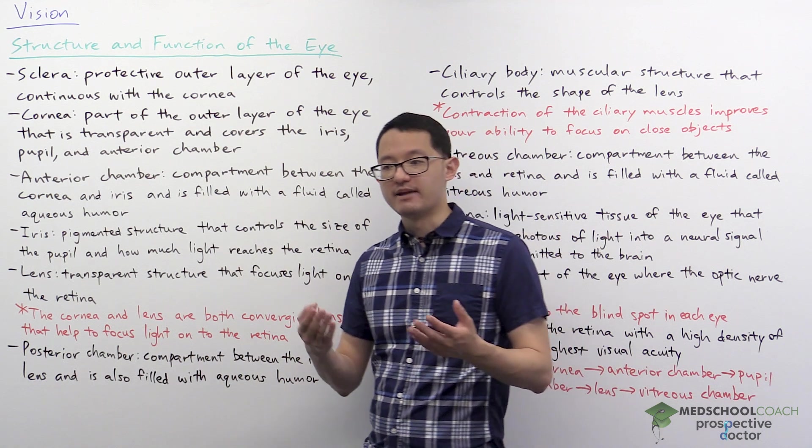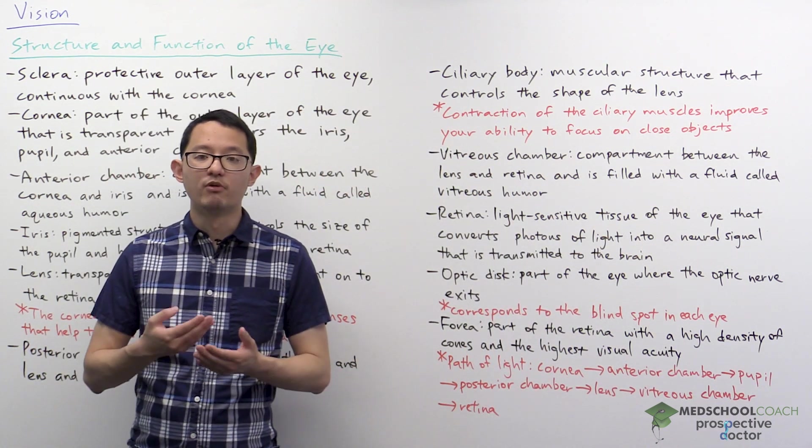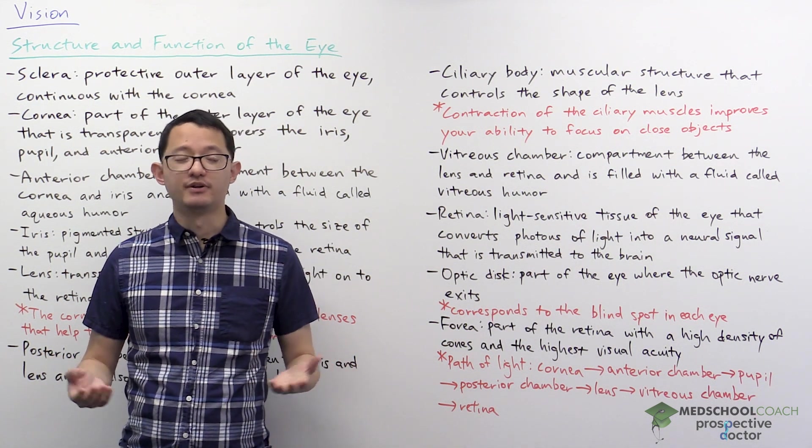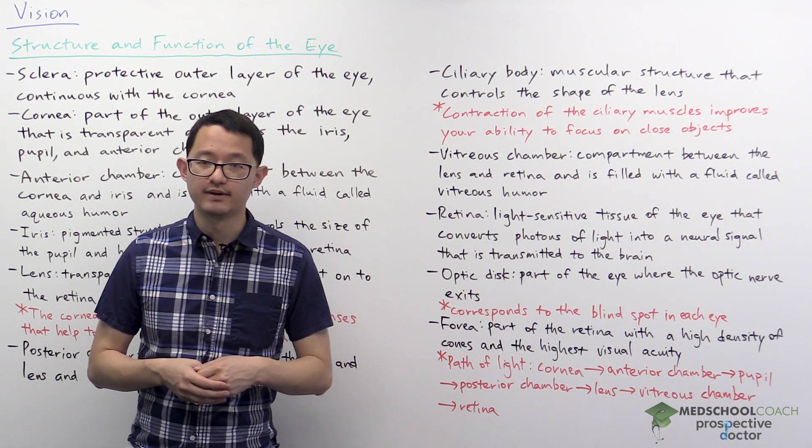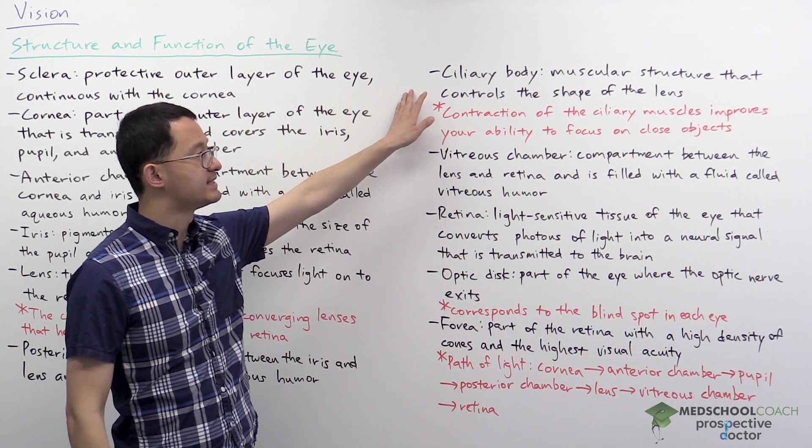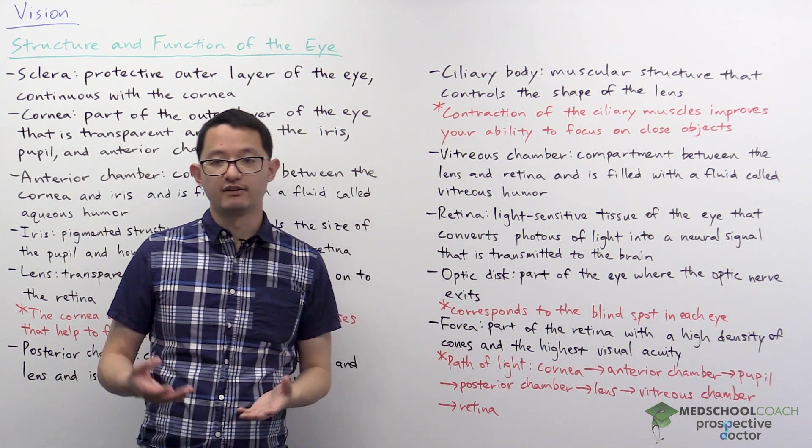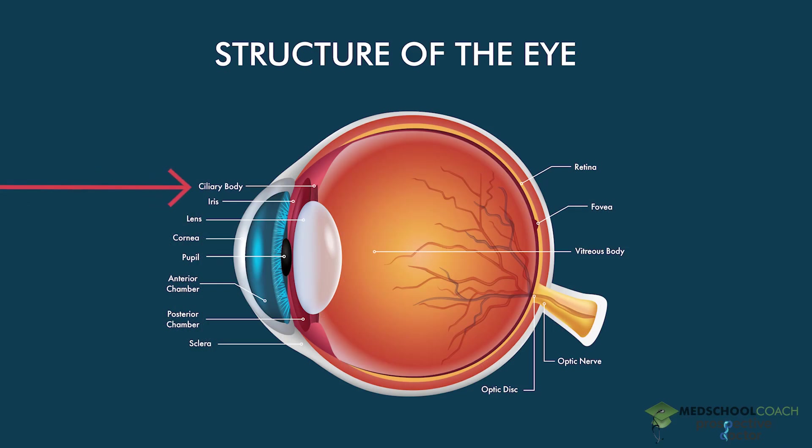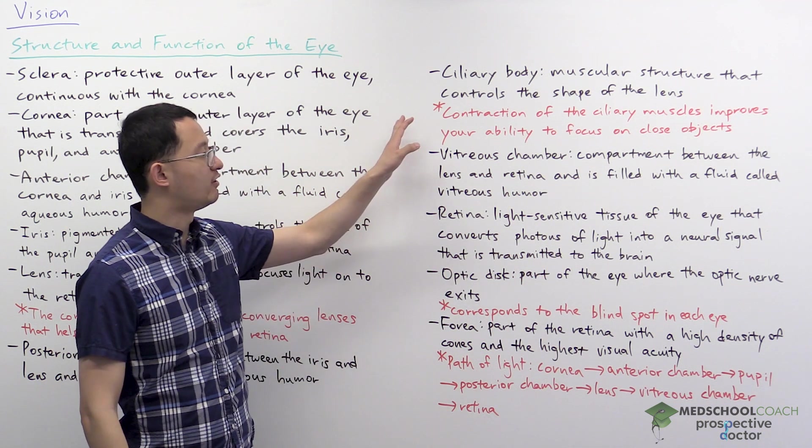The interesting thing is that between the cornea and the lens, the cornea actually has more optical power than the lens. So you might wonder, why do we call the lens the lens if it's weaker than the cornea? A major reason is because the lens is attached to a structure called the ciliary body. If you take a look again at the diagram, you'll see that the ciliary body is a muscular structure, and it actually controls the shape of the lens.